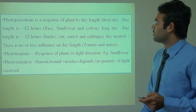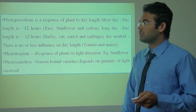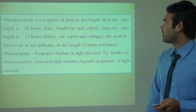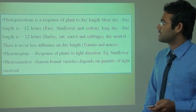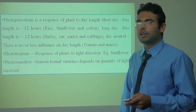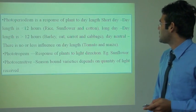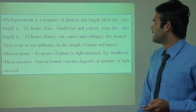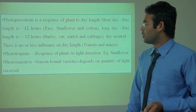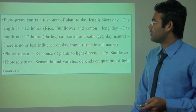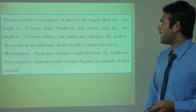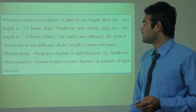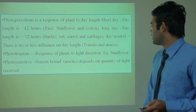Plants respond to day length through photoperiodism. Short day plants require less than 12 hours of light, like rice, sunflower and cotton. Long day plants require greater than 12 hours of light, like oat, carrot and cabbage. Day-neutral plants have no or little influence from day length, such as tomato and maize. Phototropism is the response of a plant to light direction, as seen in sunflower. Photosensitive season-bound varieties depend on the quality of light received.